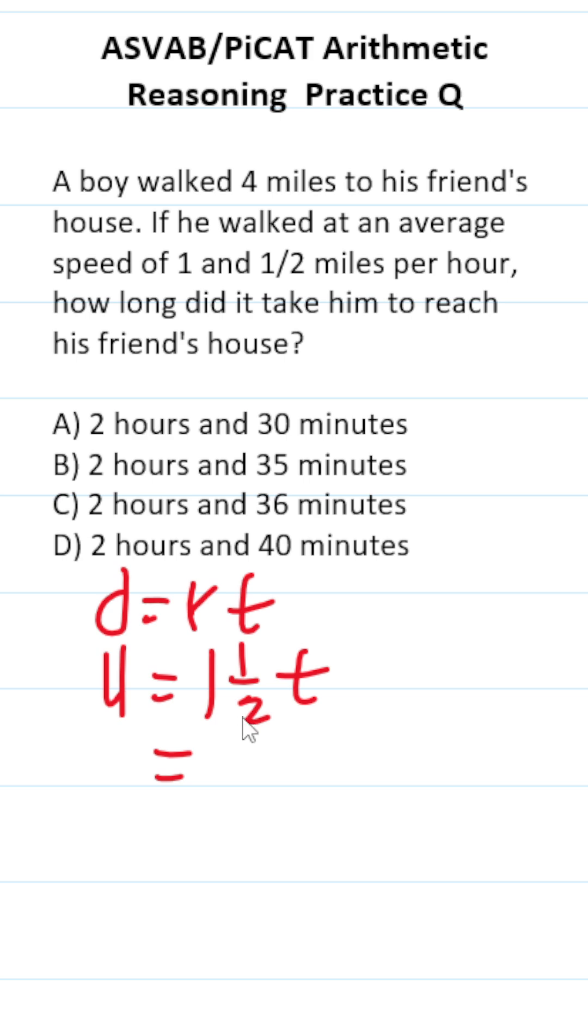Let's convert this to an improper fraction. It's going to be 3 over 2t equals 4. Multiply both sides by the reciprocal to clear that in front of t.